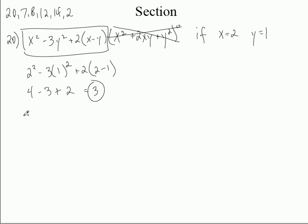4 minus 3 is 1 plus 2 is 3. That was hardly worth doing, wasn't it? All right, come on, let's do something real here. Number 7, all right.